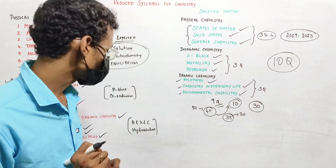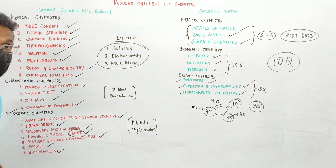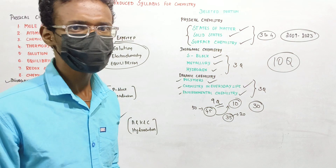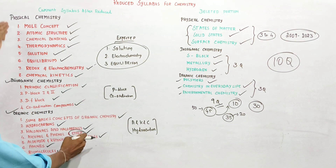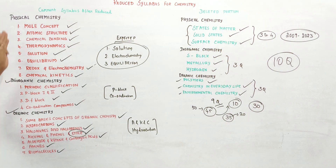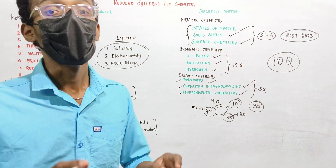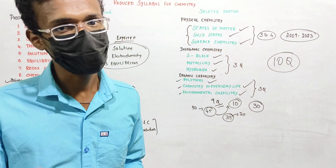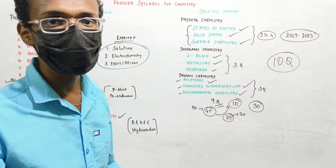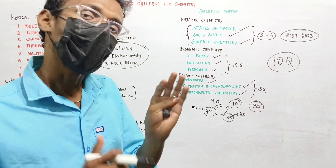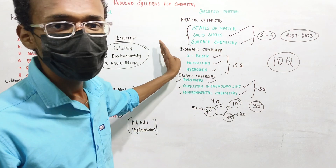Some students say alcohol, phenols, and ethers are not in the syllabus, but you can still use that content. In the reduced syllabus, some topics are removed from physical chemistry, inorganic chemistry, and organic chemistry. I will tell you which concepts are removed — you can skip those topics entirely.